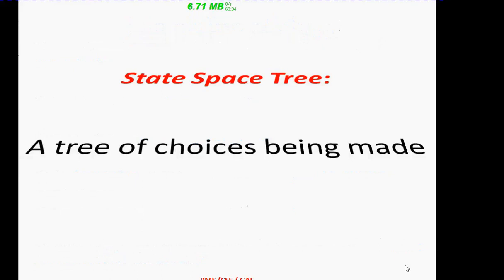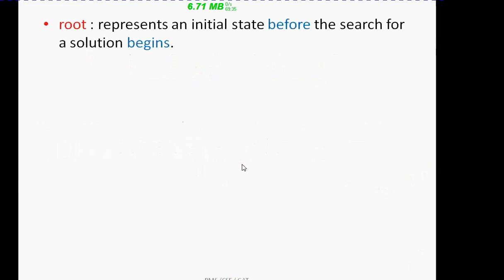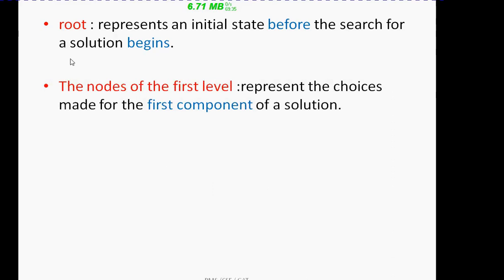A state space tree is a tree of choices being made to find the solution. For the construction of such a state space tree, we should start from the root node and continue building the tree until we reach the leaves. Each node will have a specific role. The root node represents the initial state of the state space tree — before we begin searching for any solution, we represent a starting node for the tree, which is the root node.